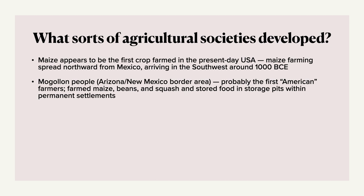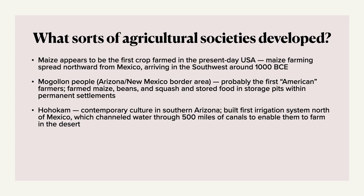What's fascinating about the Three Sisters is that each of those crops benefits the other two. The beans add nutrients to the soil that benefit the squash, and the corn forms a nice stalk that the beans can grow up, since beans like to vine. So this reveals that they understood companion planting. The Hohokam were a contemporary culture in southern Arizona, and they built the very first irrigation system we know of north of Mexico, which channeled water through 500 miles of canals to enable farming in the desert.